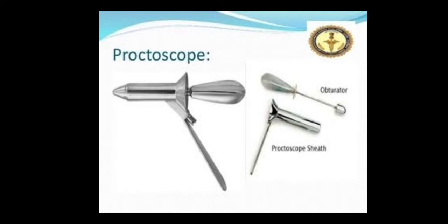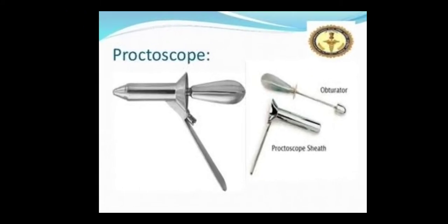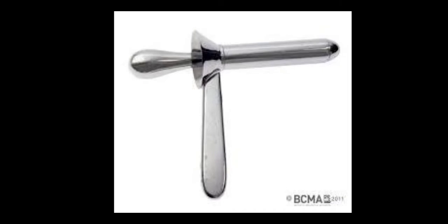This one is a proctoscope. Proctoscope is an instrument used for the examination of the anus and rectum. You can see the parts of the proctoscope: the inner one is called the obturator and the outer one is called the proctoscope sheath. This is also a diagram of the proctoscope.